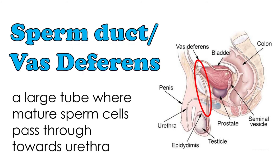Next, we have the sperm ducts, also called vas deferens. The vas deferens is a large tube where mature sperm cells pass through from the epididymis towards the urethra. Once released from the epididymis, the sperm cells travel through this tube called the vas deferens.